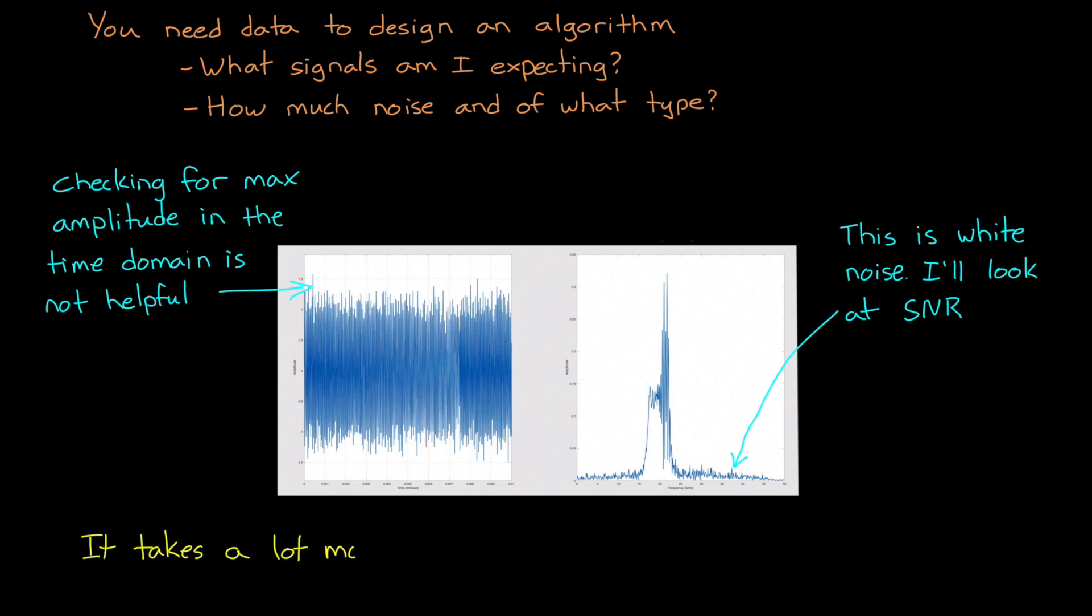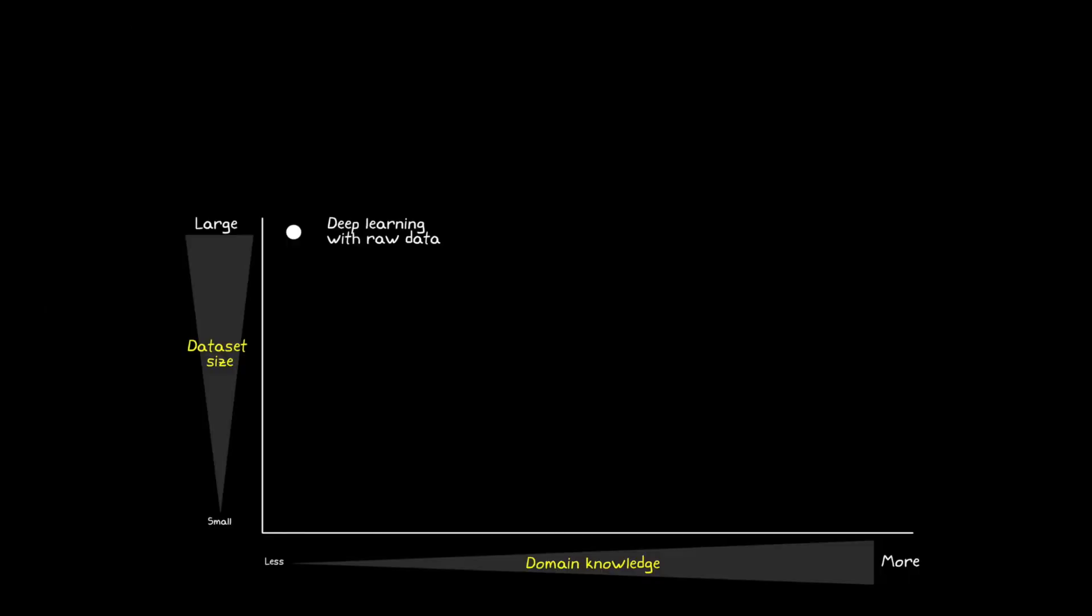Therefore, it takes many more examples of labeled data for the network to understand even basic concepts like rising edges in a signal, let alone combining those edges into more abstract concepts like waveforms and noise. So in this way, we're using more data to offset the experience and knowledge that humans would normally bring to the problem.